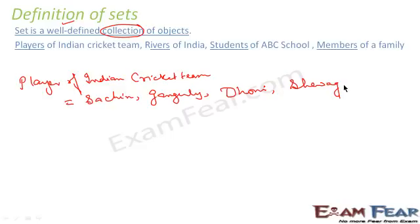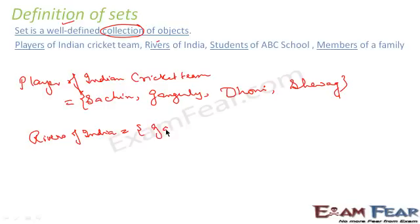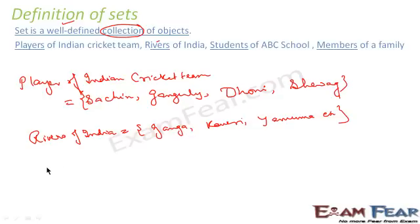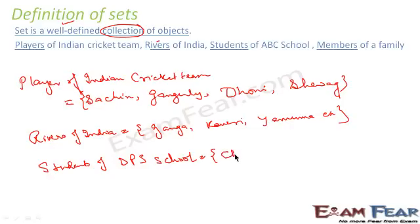This is one set of objects — players of the Indian cricket team. Similarly, when I say rivers of India, this set will include rivers like Ganga, Kaveri, Yamuna, etc. These are all the set of rivers of India. Similarly, when I say students of a school — let's say DPS school — so these are the students of DPS school. This set can have students like Chintu, Anand, etc.